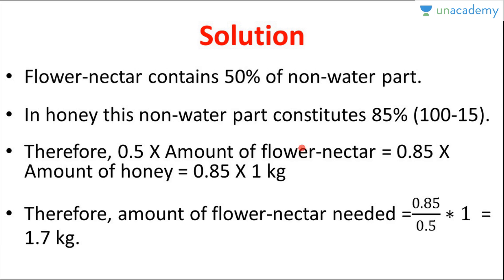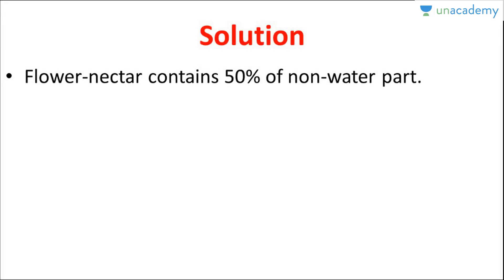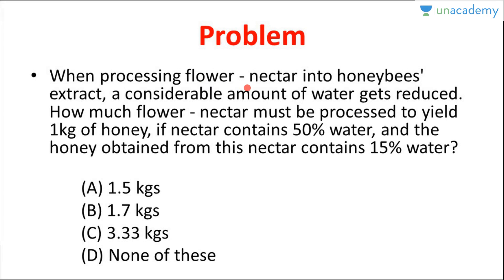So the main concept in this question: flower nectar contains honey and water. When it is processed, the amount of water gets reduced, the percentage of water gets reduced, and the proportion of water also reduces. Meanwhile, the amount of honey (the non-water part) does not change, while the percentage and proportion of honey increases. This is the concept we need to understand in this question. Thank you.